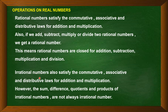Irrational numbers also satisfy the commutative, associative and distributive laws for addition and multiplication. However, the sum, difference, product or quotient of irrational numbers may or may not be irrational — we might get a rational number. So that closure property does not hold true for irrational numbers.